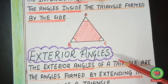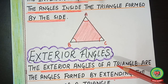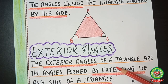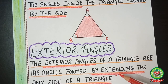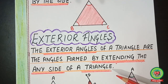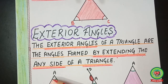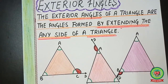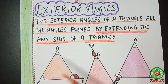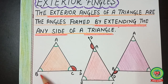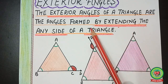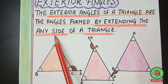Now let's talk about exterior angles. The exterior angle of a triangle is the angle formed by extending any one side of the triangle. Let me show you where the exterior angles are. For example, in this triangle, if I am extending this side, that extension creates an exterior angle.